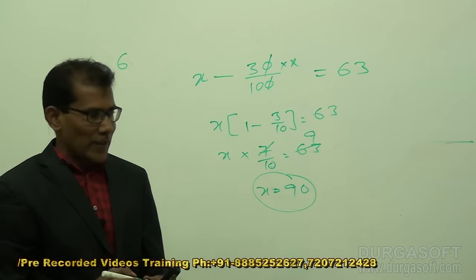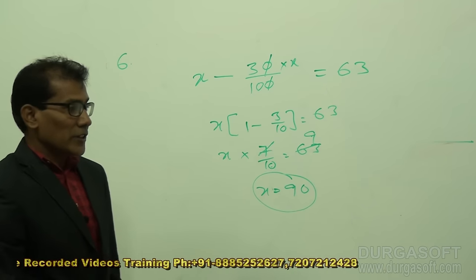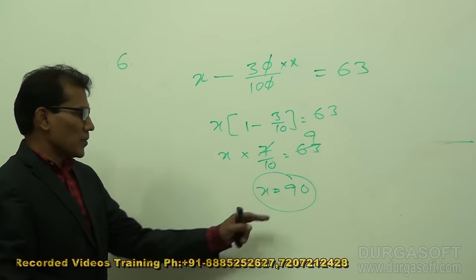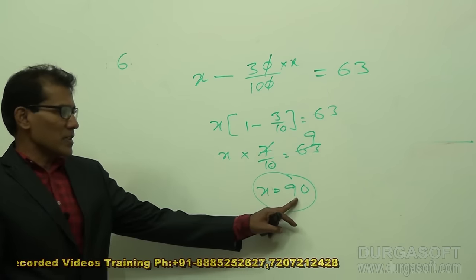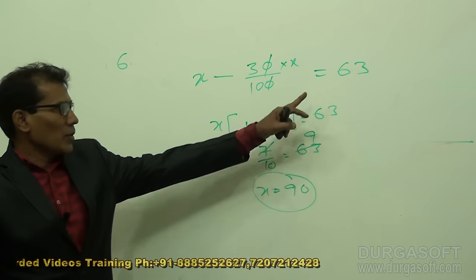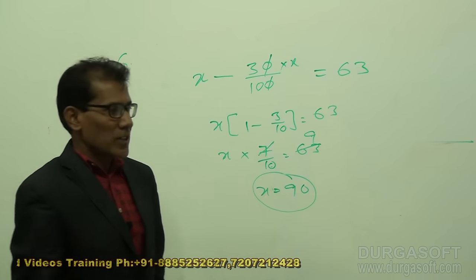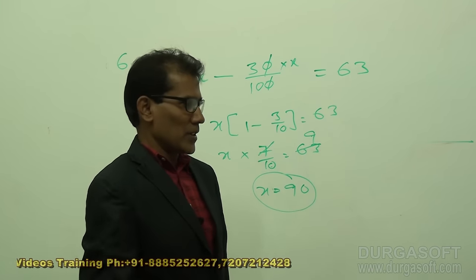So the answer is 90. X is the original value, and from x if 30 percent is reduced, you are going to get 63. That is how we work out this problem.